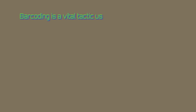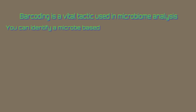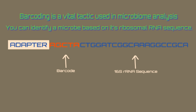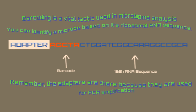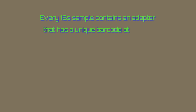Barcoding is a vital tactic used in microbiome analysis. You can identify a microbe based on its ribosomal RNA sequence. Barcoding is simply the addition of a short nucleotide sequence that is attached to an adapter and a 16S rRNA sequence. The adapters are there because they are used for PCR amplification. Every 16S sample contains an adapter that has a unique barcode attached.